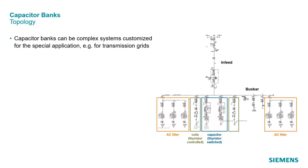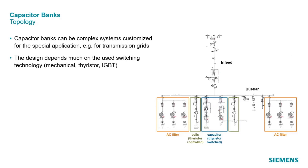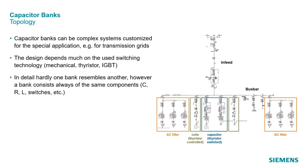Capacitor banks can be complex systems customized for the special application, for example for transmission grids. The design depends much on the used switching technology: mechanical, thyristor, IGBT. In detail, hardly one bank resembles another. However, a bank consists always of the same components: capacitors, resistors, coils, switches, etc.